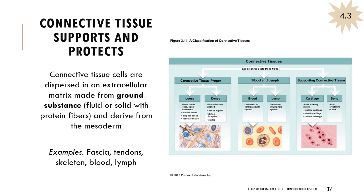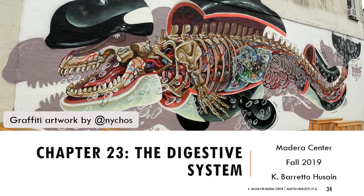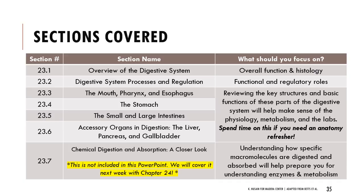There's also connective tissue. Connective tissue is very important for supporting and protecting. There are lots of different types, but what they have in common is that the tissue cells are dispersed inside a matrix called the ground substance. When we talk about blood, we'll talk about blood cells dispersed within this plasma ground substance. I'm going to let you go through the important points on your own to make sure you understand what to focus on — there's a lot of text there.